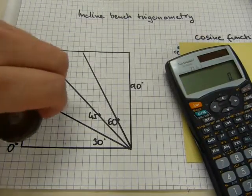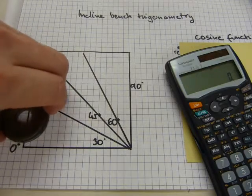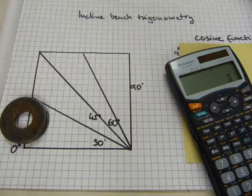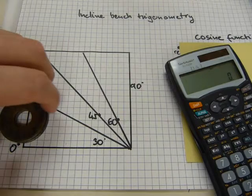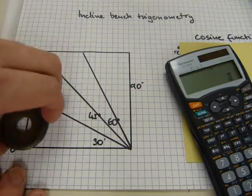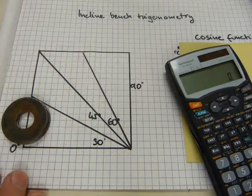When you're on a horizontal bench doing bench presses, the weight is moving up and down. Gravity is pulling it down this way.